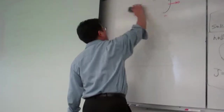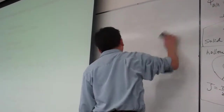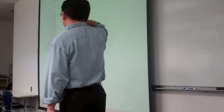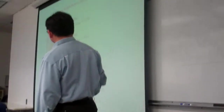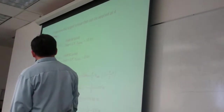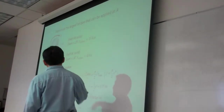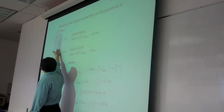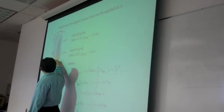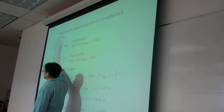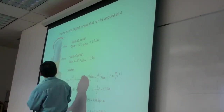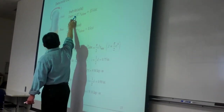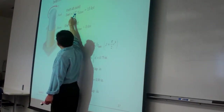I just added this problem. You can take time to write it down. The problem statement is pretty straightforward. Basically, that is a composite shaft. The upper is made of steel, the lower is made of brass. We are given the dimensions. The diameter for steel is 1.5 inches.